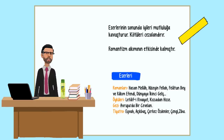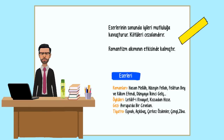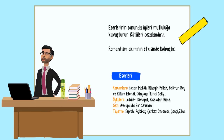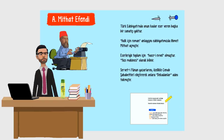Ahmet Mithat Efendi'nin eserleri — Romanları: Hasan Mellah, Hüseyin Fellah, Felatun Bey ve Rakım Efendi, Dünyaya İkinci Geliş. Öyküleri: Letaif-i Rivayat, Kıssadan Hisse. Gezi: Avrupa'da Bir Cevelan. Tiyatroları: Eyvah, Açıkbaş, Çerkez Özdenler, Çengi, Ziba.